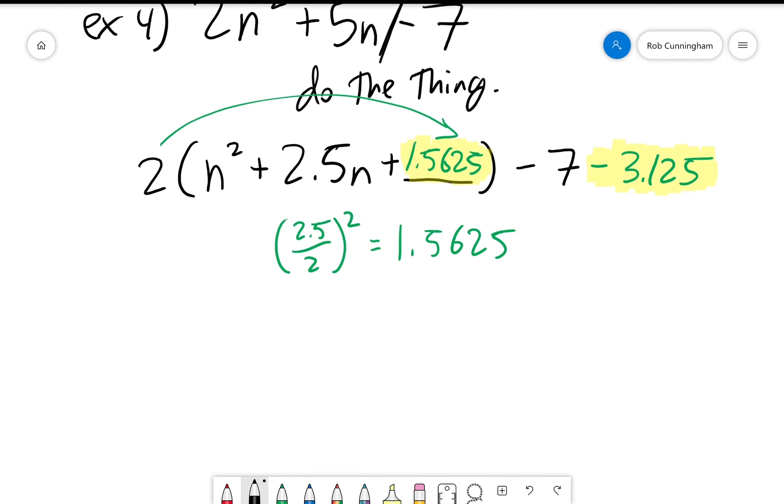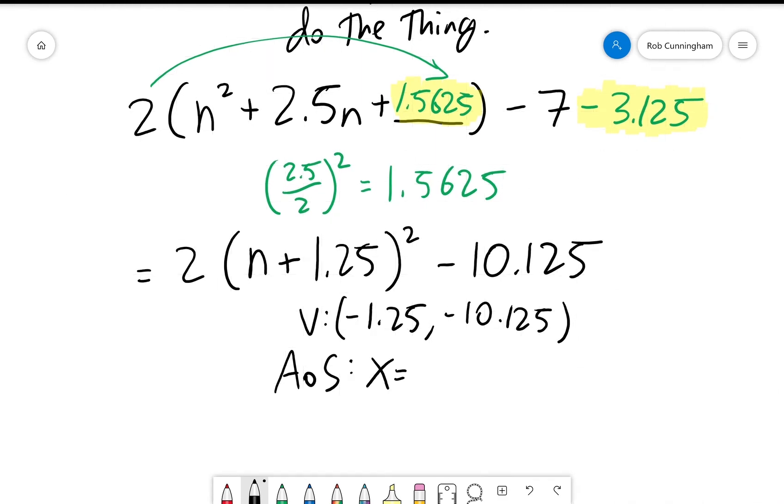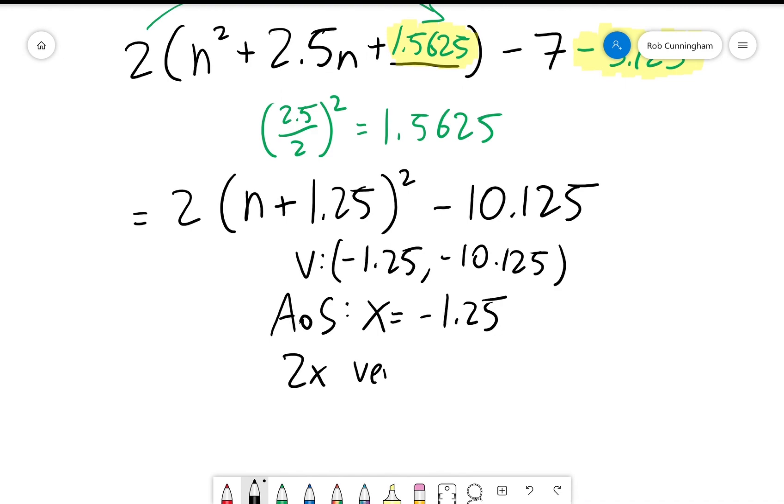Okay, finally, last step, I promise: 2 times n plus—what is 2.5 over 2? Actually, 2.5 divided by 2 is 1.25—squared minus 10.125. So our vertex is negative 1.25, negative 10.125. Our axis of symmetry is x equals negative 1.25, and we have a 2 times vertical stretch.